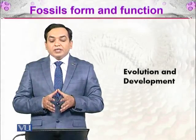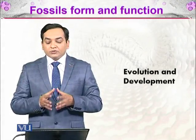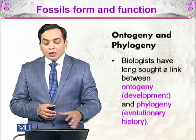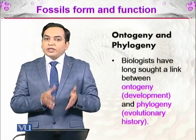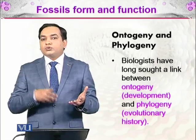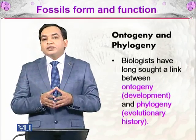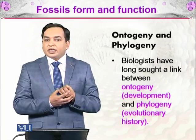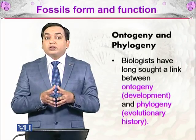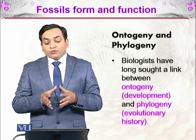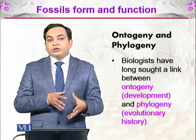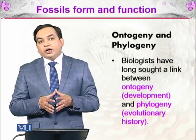Our next topic is about fossil form and function, in which we will be discussing evolution and development. These are two different concepts: evolution is how an organism develops from simpler life forms to a complex life form, while in development, an organism develops from a single-cell zygote to a complete embryo. One concept is called ontogeny and the other is phylogeny. Ontogeny is related to development and phylogeny is related to evolutionary history.